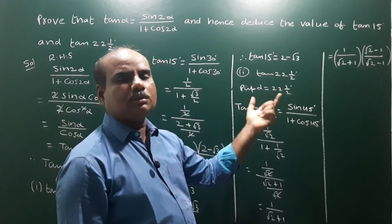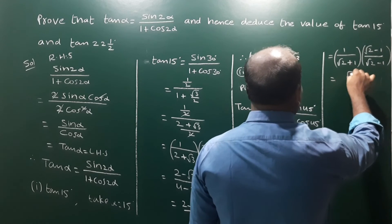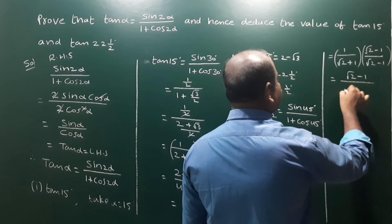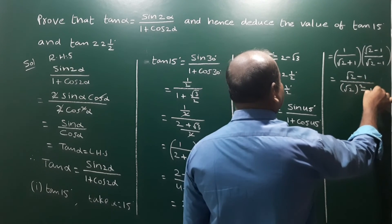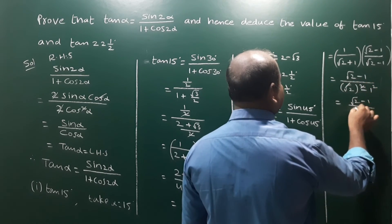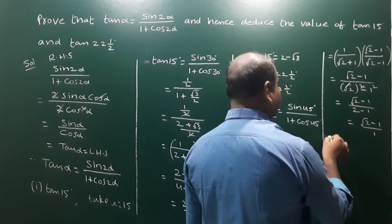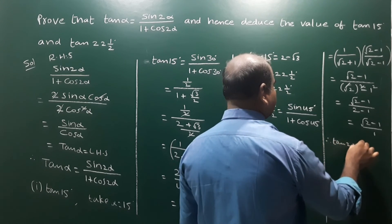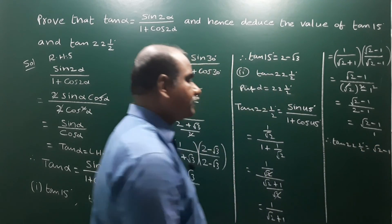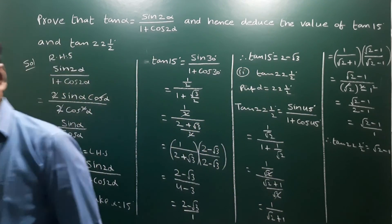To rationalize, multiply numerator and denominator by the conjugate (√2 − 1). The numerator becomes √2 − 1, and the denominator becomes (√2)² − 1² = 2 − 1 = 1. Therefore tan 22.5° = √2 − 1. And tan 15° = 2 − √3. Those are the answers.